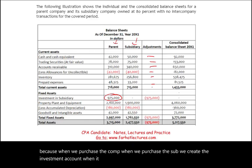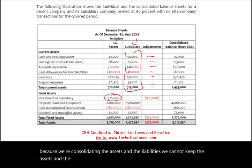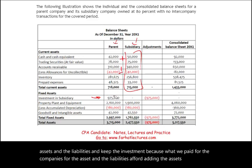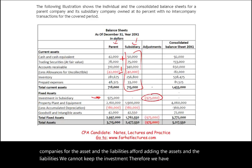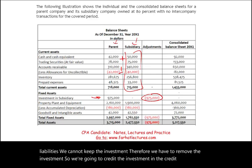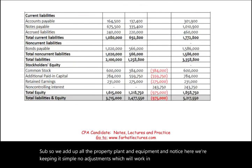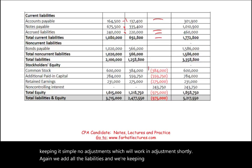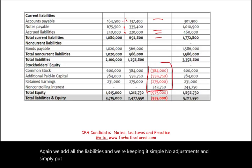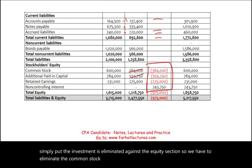The investment account must be eliminated because when we purchased the subsidiary, we created the investment account. When we consolidate, we must remove it — we're consolidating the assets and liabilities, so we cannot keep both the assets and liabilities and the investment. We credit the investment, and that credit is against the equity section of the sub — common stock, additional paid-in capital, and retained earnings.